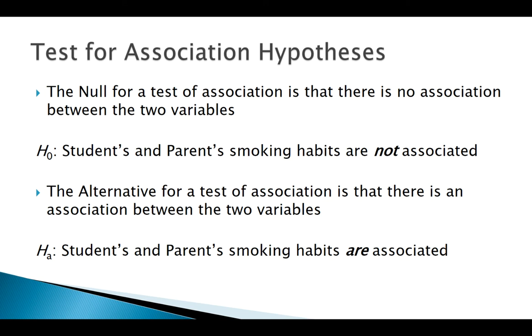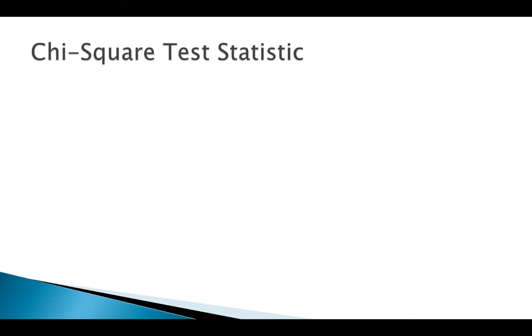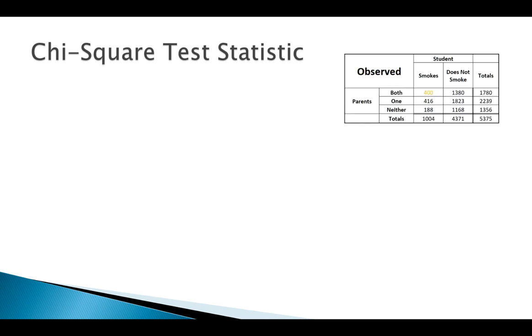Let's go about calculating our test statistic. Here is our observed data. We technically need to check our conditions. For that, we need the expected, and in order to calculate our expected, we're going to focus on this first cell here, cell one-one.